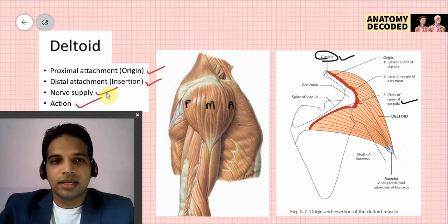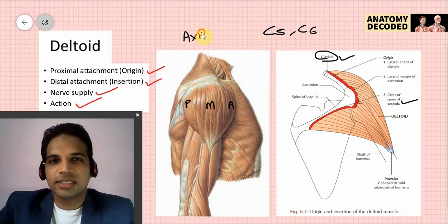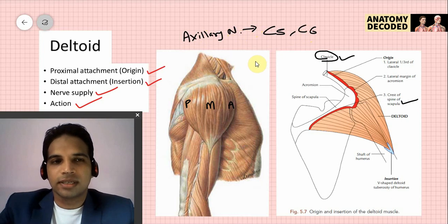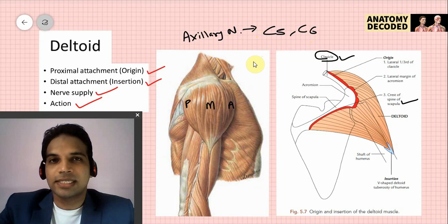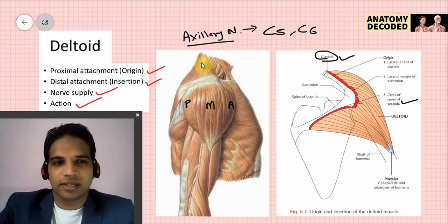The nerve supply of the deltoid muscle is the axillary nerve, with root values C5 and C6. The axillary nerve is a branch from the posterior cord of the brachial plexus. There is one more muscle supplied by the axillary nerve: teres minor.